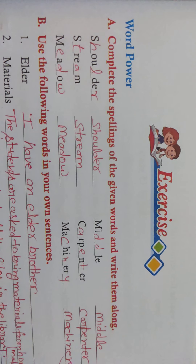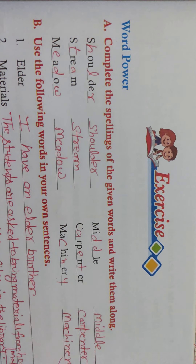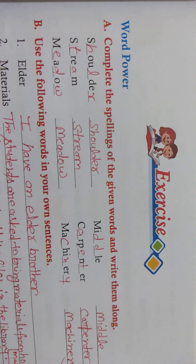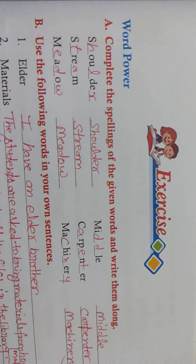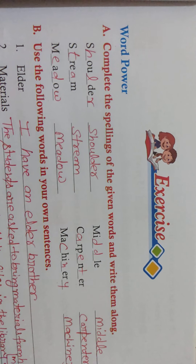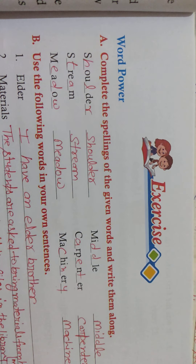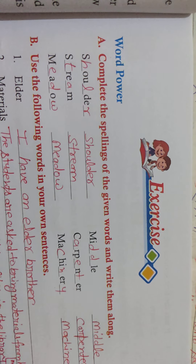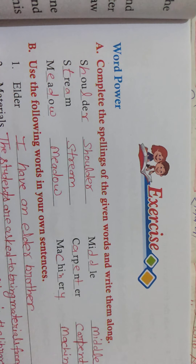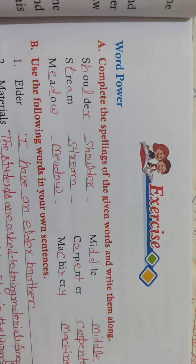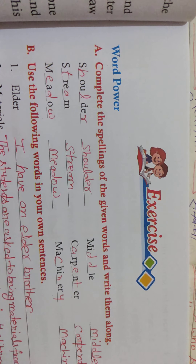Next topic. Complete the spelling of the given words and write them along — the words have missing letters. When we fill in the missing letters, we get a meaningful word. First word: Shoulder, S-H-O-U-L-D-E-R.